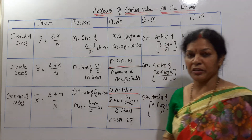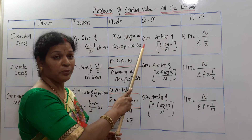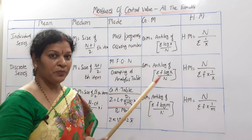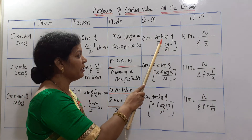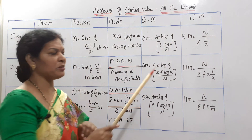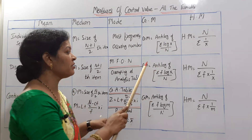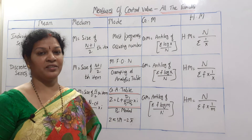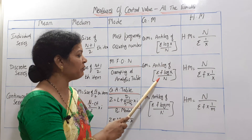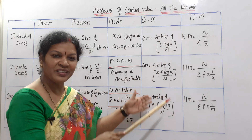Geometric mean formulas are very easy. Individual series: GM = antilog of (Σ log x / n) — first find log x for each value, divide by n, then take the antilog of the result. Discrete series: GM = antilog of (Σ f·log x / n) — same as individual but multiplying log x by frequency f.